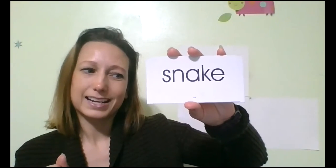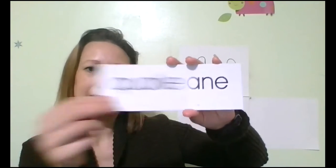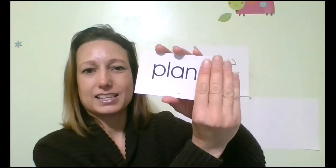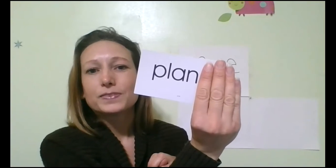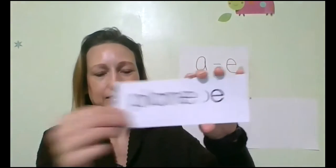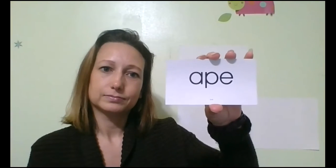Class. Snake. Vein. Blaze. Quake. Plane. Take the E off it is plan. I have a plan to ride on a plane. Ape. Maze.